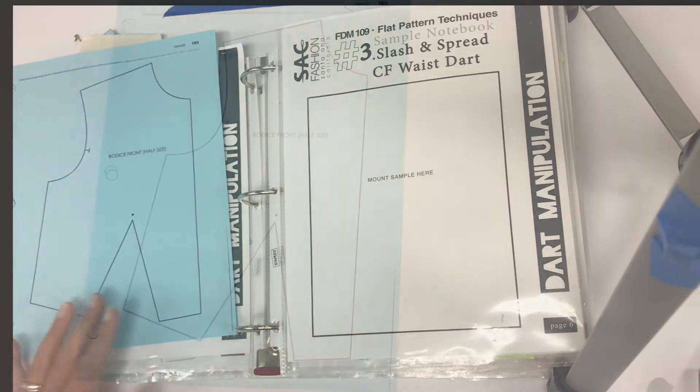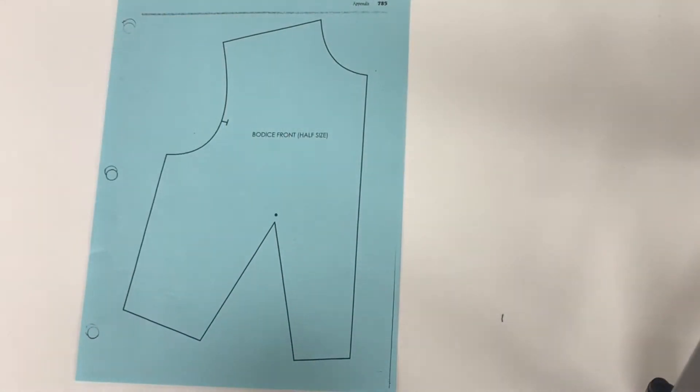Okay, so let's get started. This notebook sample is in your book and we're gonna follow the steps in your book. In my book it's on page 77, but I know there's different versions out there. It's called the center front waist dart. It's under the single dart series slash and spread technique and it's in chapter 4.